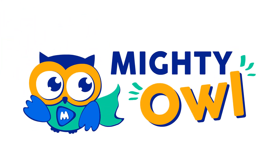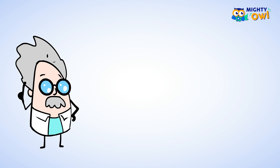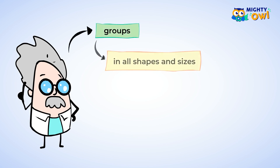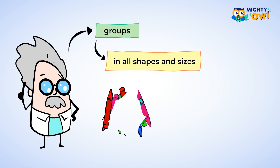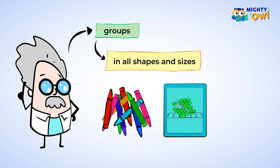Hello, this is MightyOwl. All around you, there are groups of objects in all shapes and sizes. Maybe you have a couple of sets of crayons on your desk, or maybe there are a few bunches of grapes in your fridge. When you have a lot of groups of something, it may be harder to figure out the total number of objects. Multiplication can help you with that.